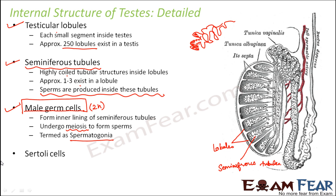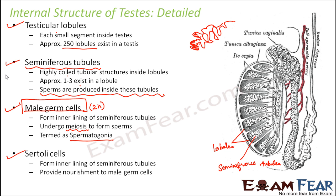Next are the Sertoli cells. These cells also form the inner lining of the seminiferous tubules. The male germ cells undergo meiosis to form sperms, and the other type of cells — the Sertoli cells — provide nourishment to the male germ cells. The male germ cells need energy to undergo meiosis, and that nutrition is provided by the Sertoli cells. Both together form the inner lining of the seminiferous tubules.